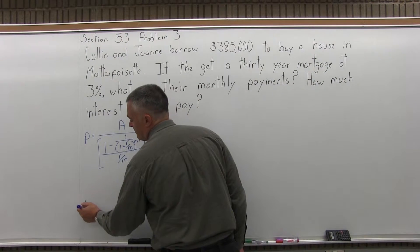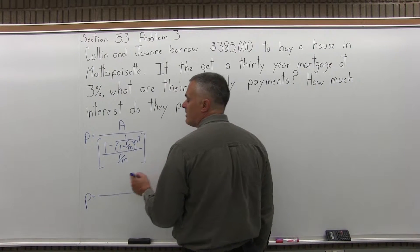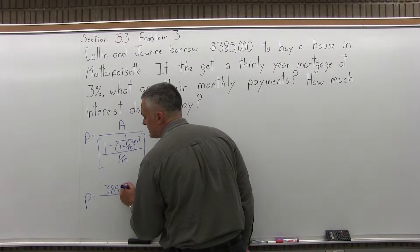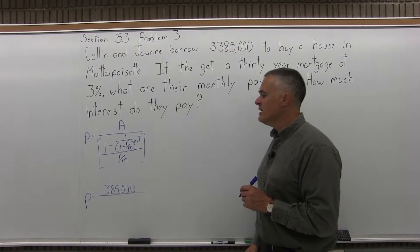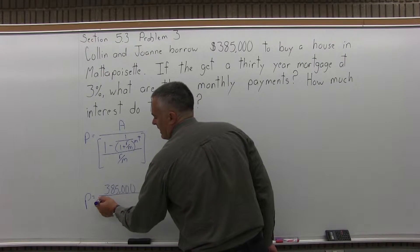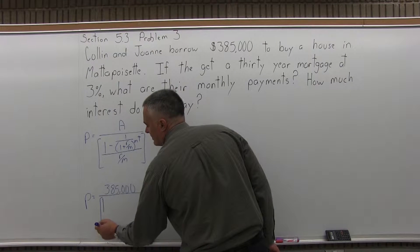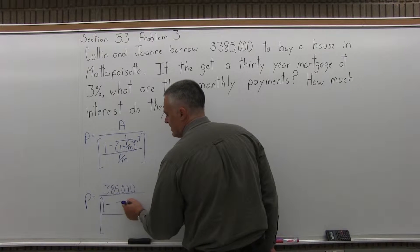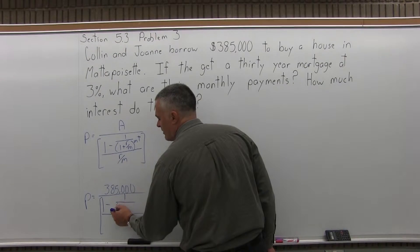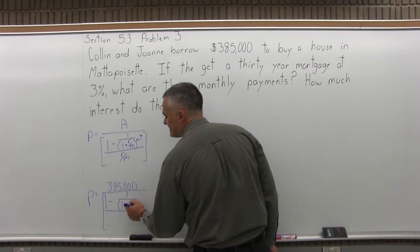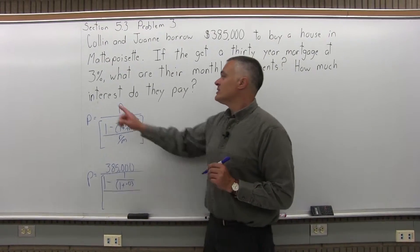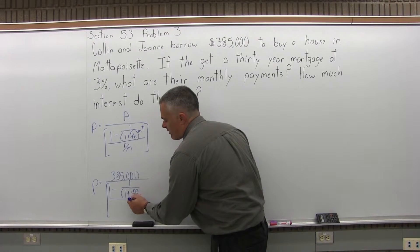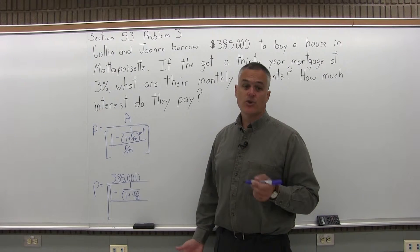So, fill it in. P equals A, the amount borrowed, which for this particular problem is $385,000. That's not necessarily what the house costs, that's what they borrowed, so they may have put something down. And you're going to have underneath the $385,000 some brackets. In the brackets you'll have, in the numerator, 1 minus some fraction. And the fraction will have 1 over 1 plus R over M. So, the R is the rate as a decimal. For this problem, the interest rate is 3%, as a decimal that's .03. And in the denominator M, which for a loan problem is the number of payments made per year, which is 12 monthly payments.